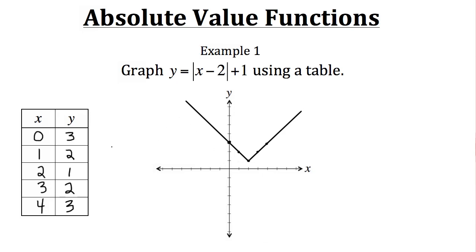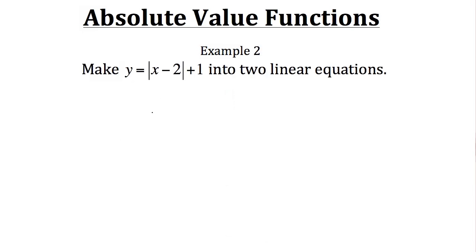Now let's look at another example of graphing absolute value functions. In example 2, they want us to turn y equals the absolute value of x minus 2 plus 1 into two linear equations. The idea behind this is that if we make two linear equations for the absolute value, we can just graph those, and they can be combined to make the graph of the absolute value function.